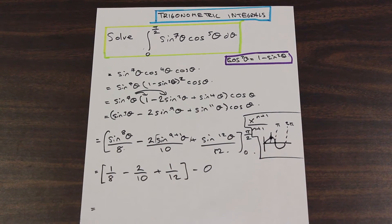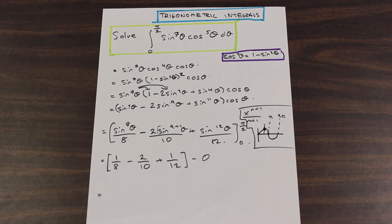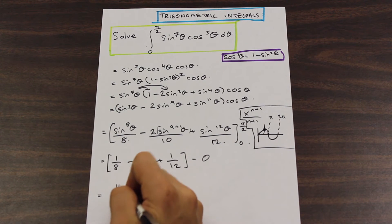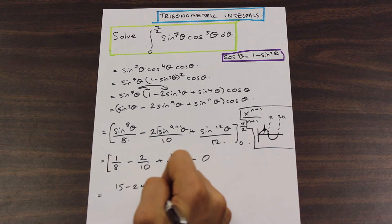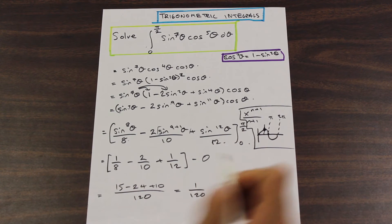If we common denominator this, which is going to end up being 120 on the bottom, I'm not going to do that for you because you don't want to see me do basic arithmetic. That is going to be equal to 15 minus 24 plus 10 over 120, and that is going to be equal to 1 over 120. So that's the answer.